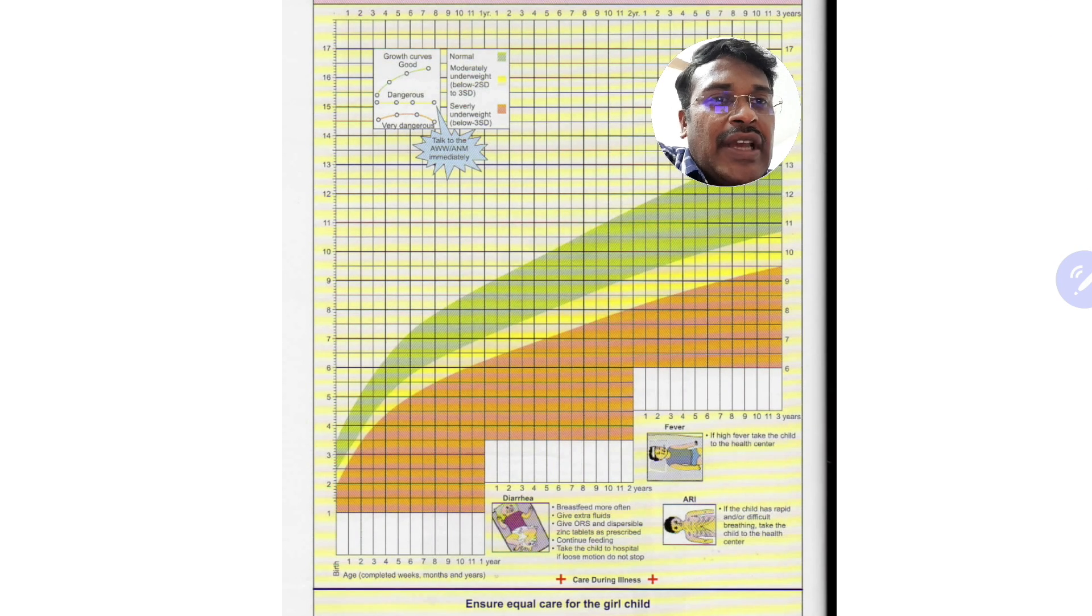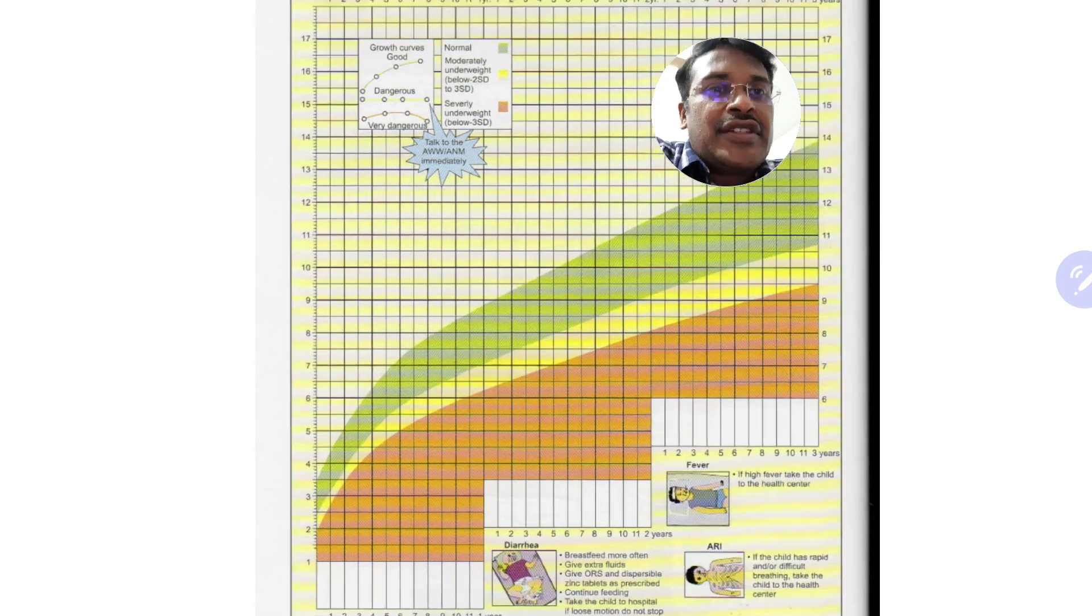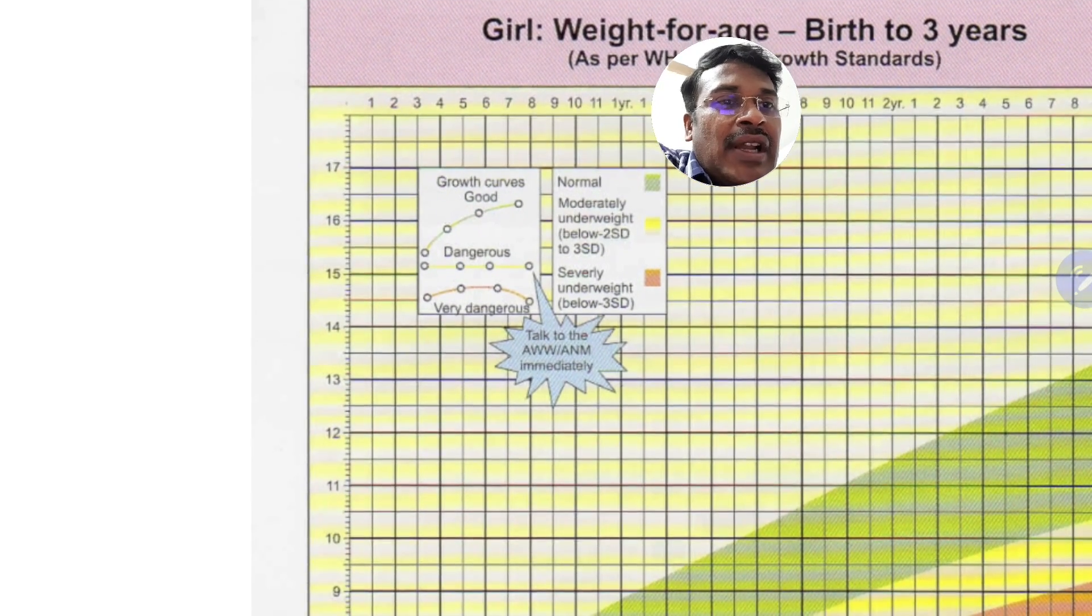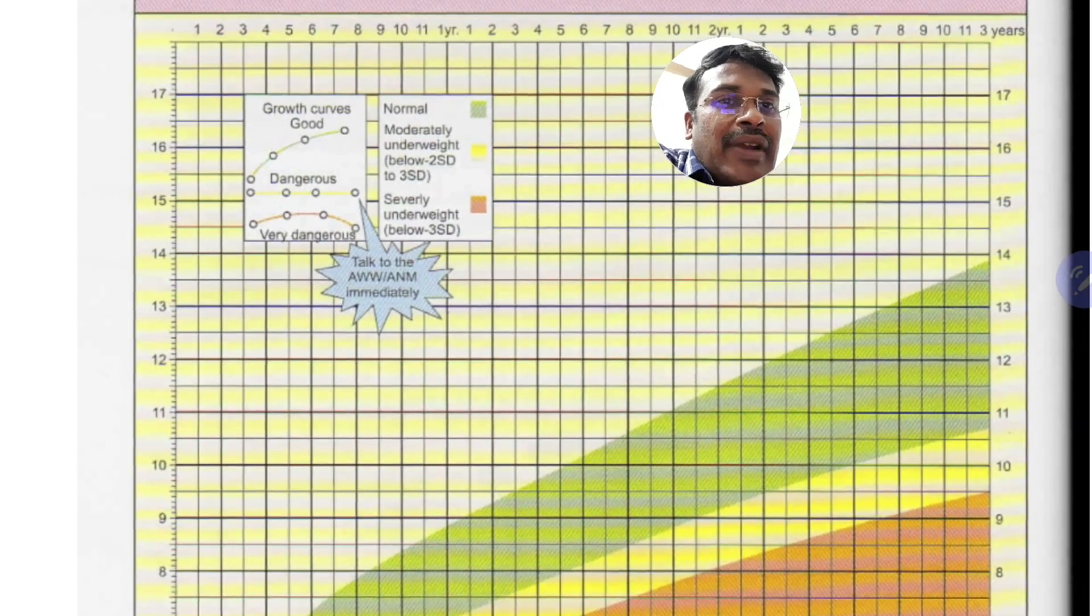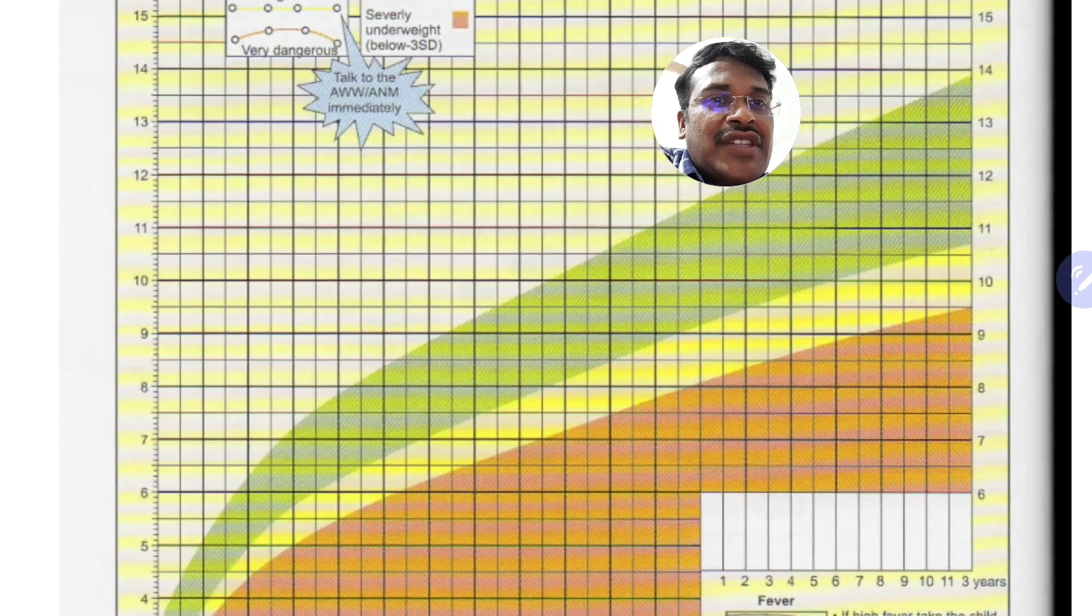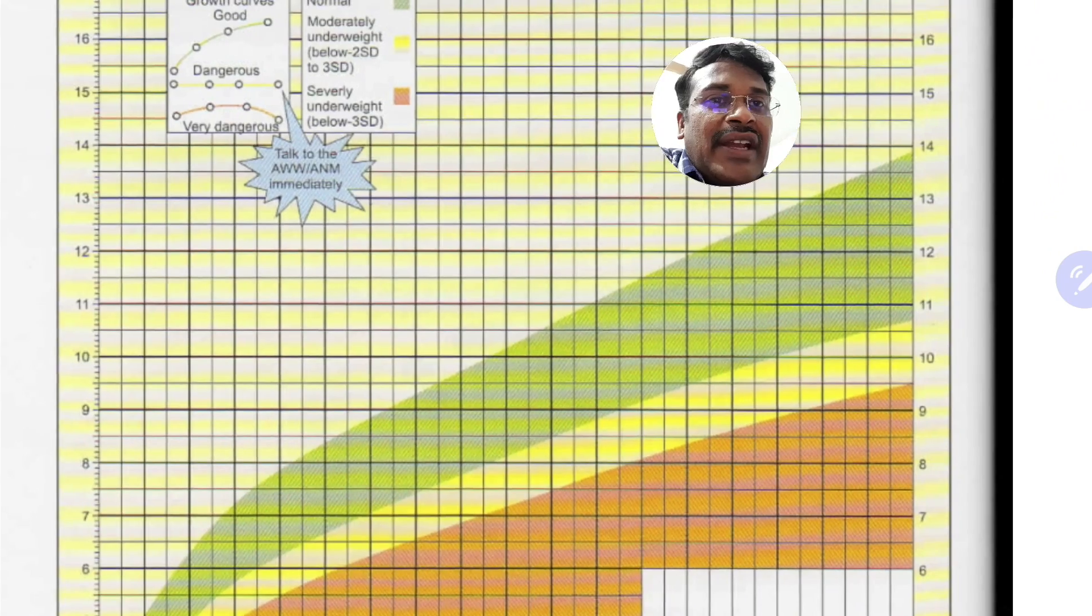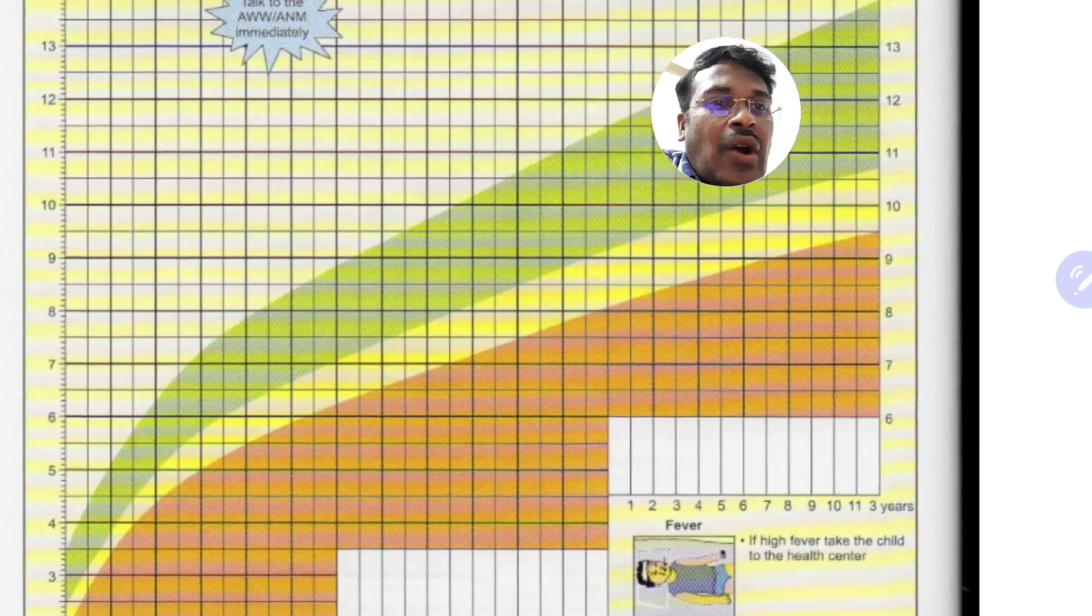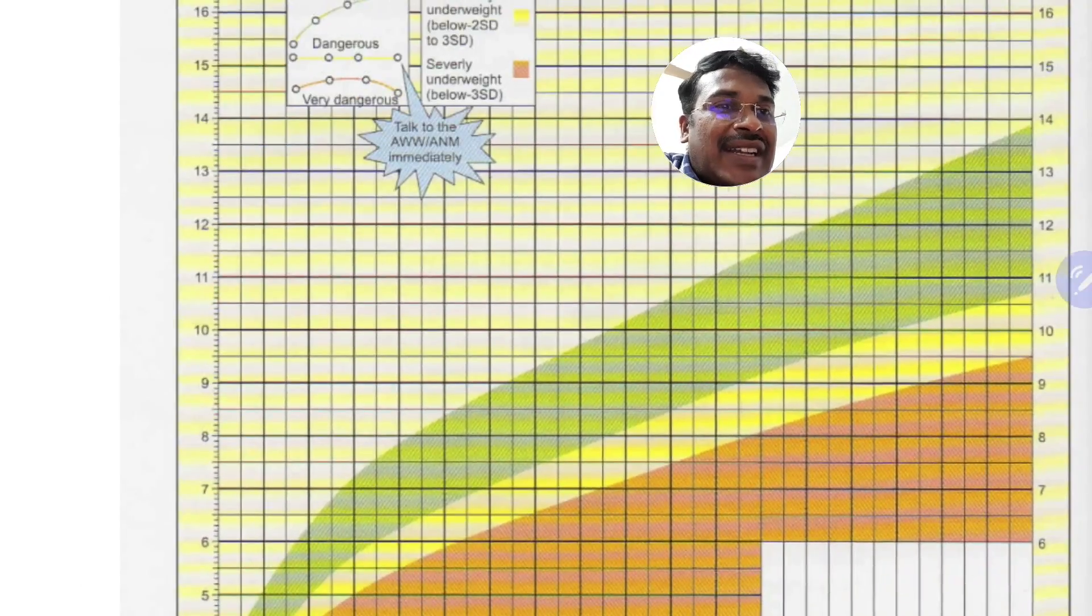We have orange, yellow and green zone. Green zone is actually normal. Yellow zone is minus 2 standard deviation to minus 3 standard deviation. That means the child is moderately underweight if the child falls here and severely underweight if the child falls in the orange zone, there is below minus 3 standard deviation.